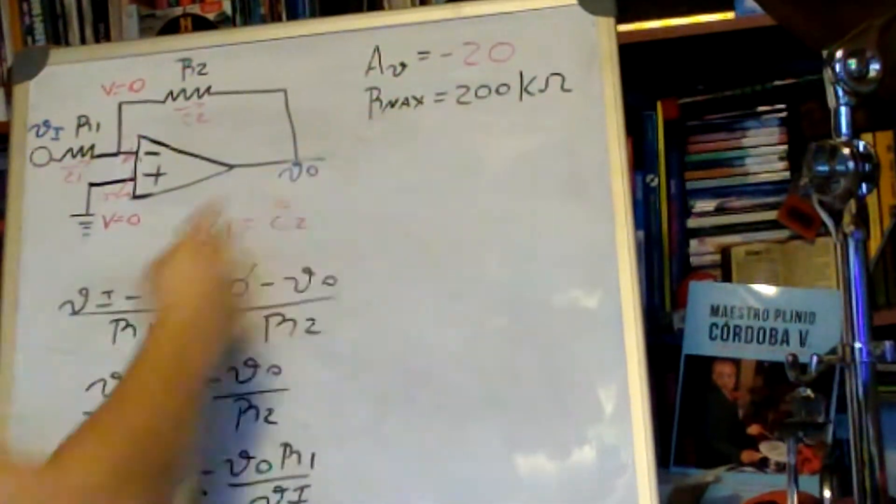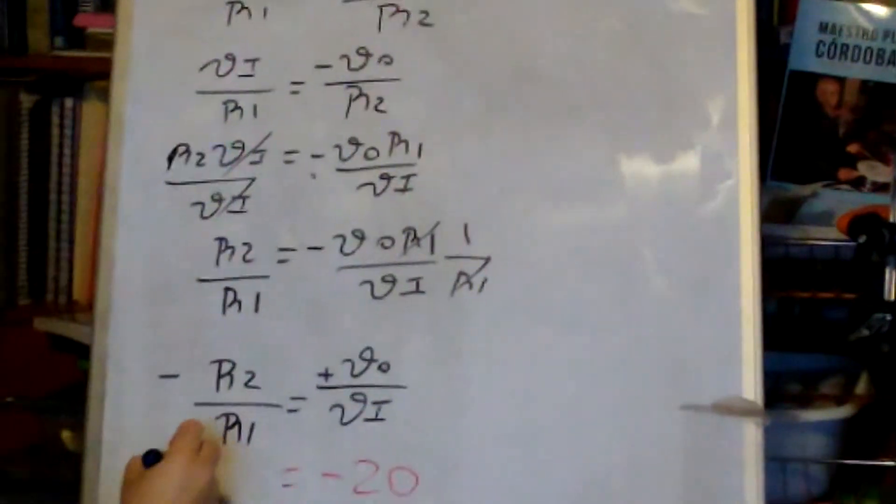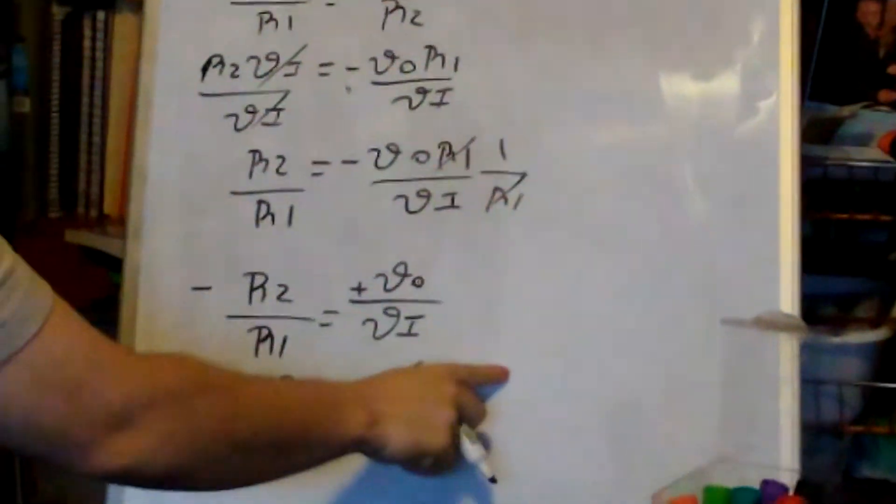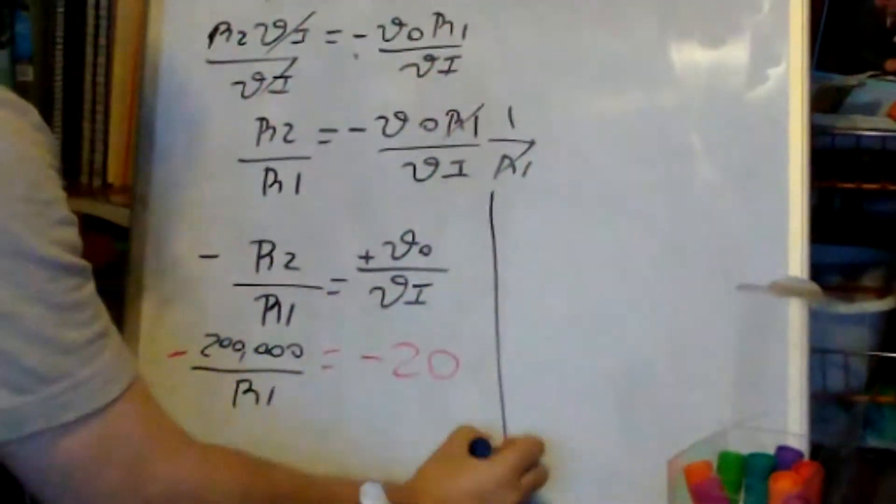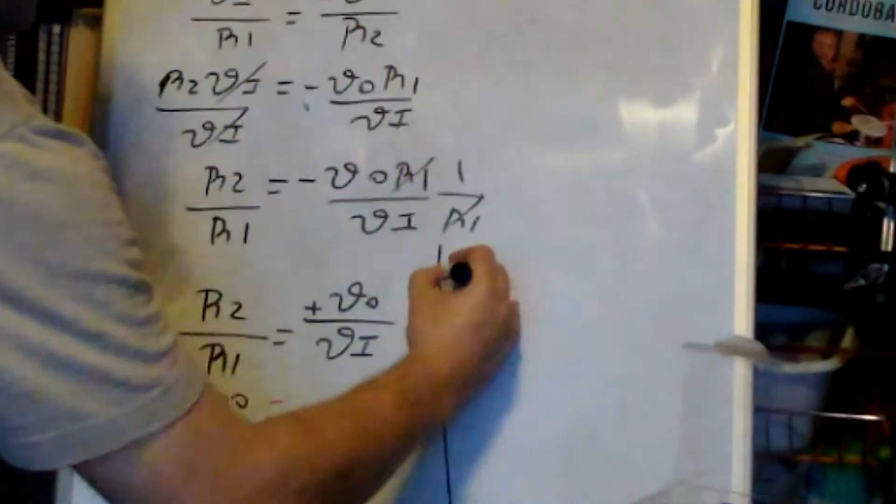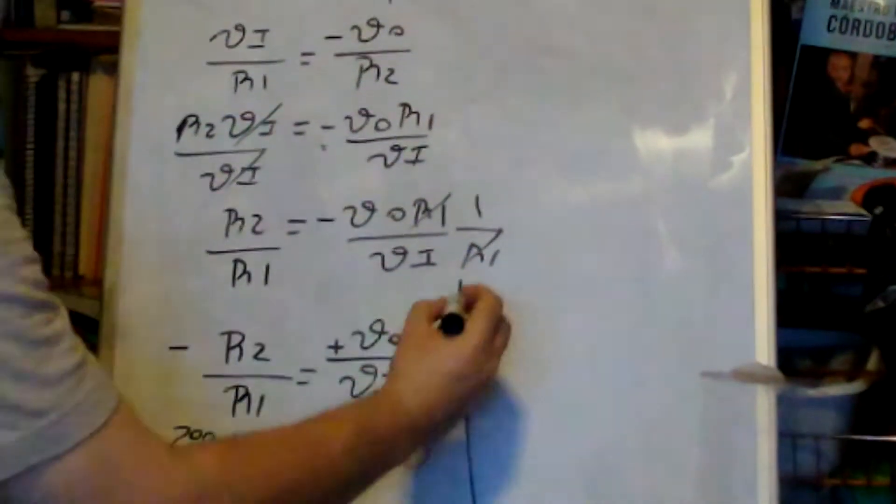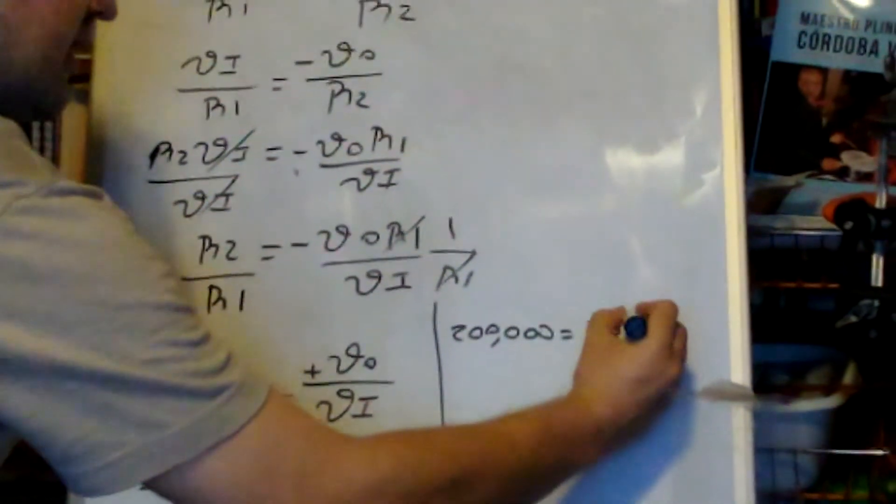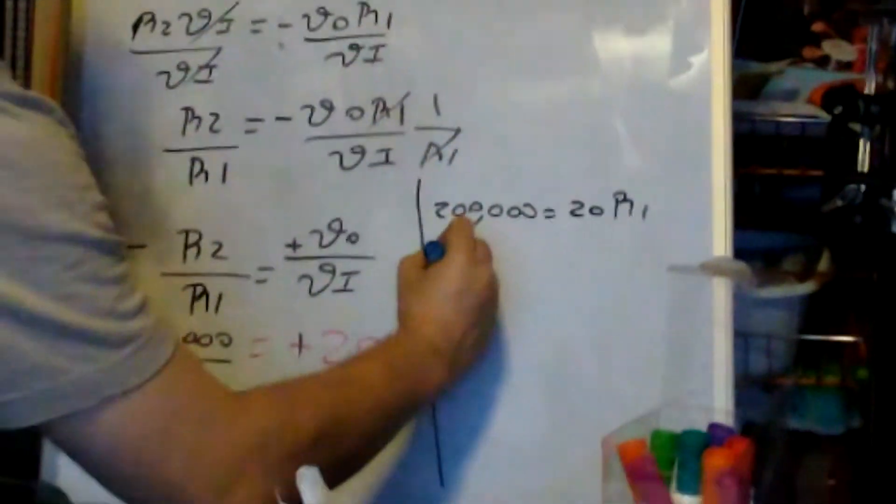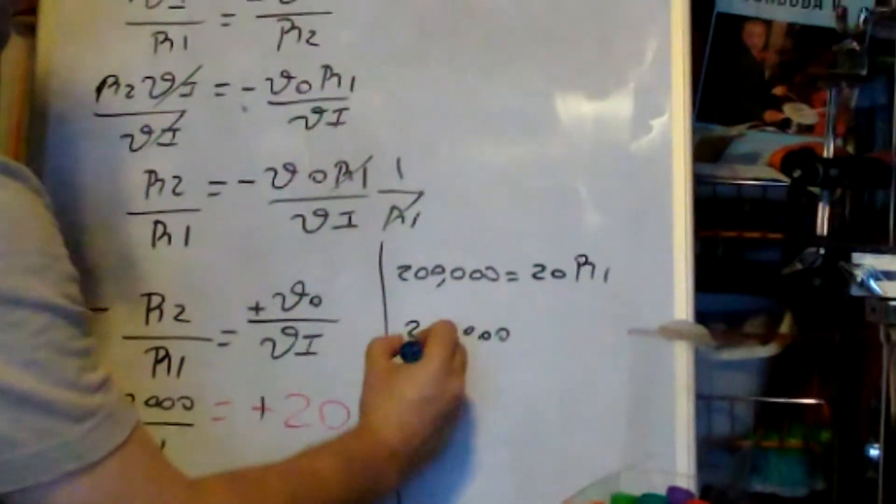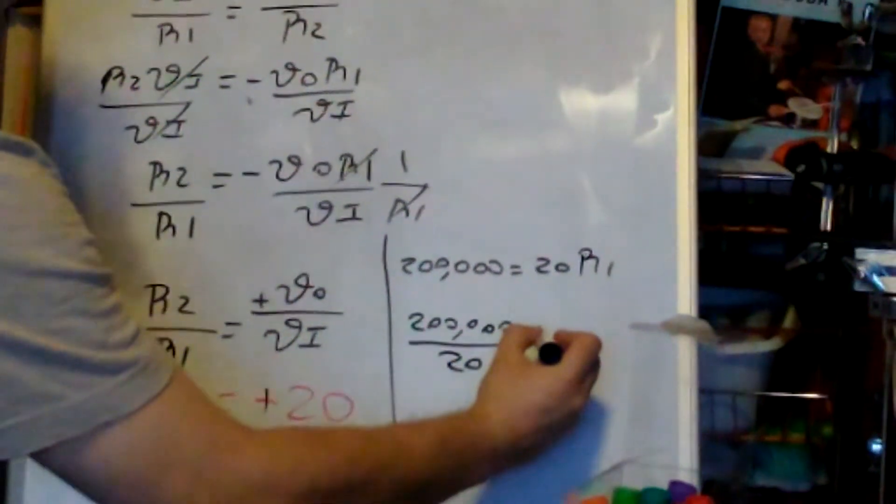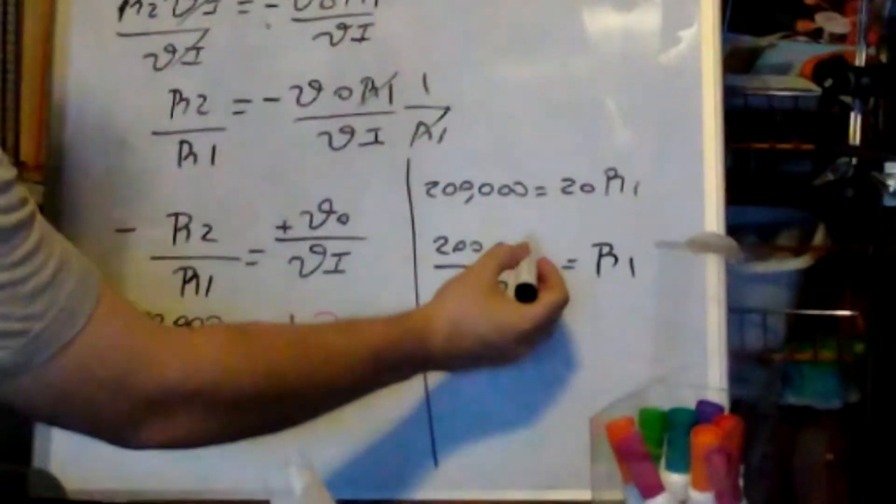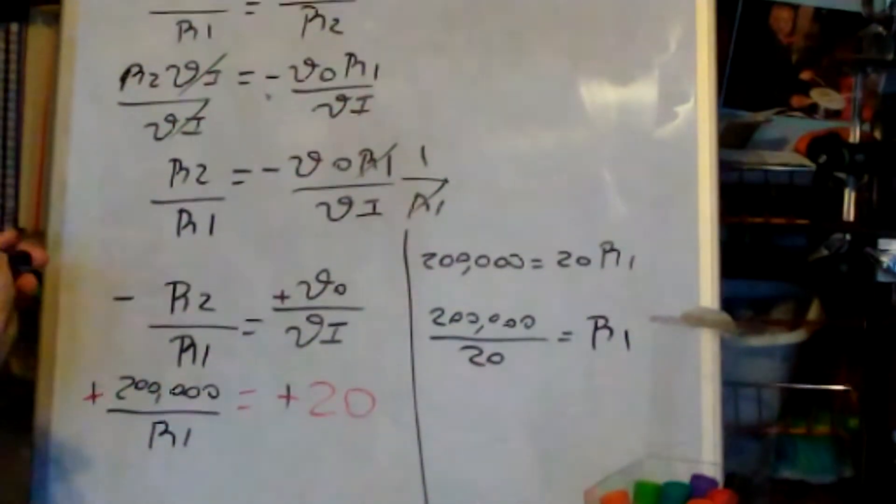So I'm going to place 200 kilo ohms over R1. I'm going to multiply R1 to this side. So you have minus and minus, it's just plus, so you have 200 kilo ohms equals 20 R1. Then I divide: 200 kilo ohms over 20 equals R1. So 200 over 20 is going to be 10,000 ohms.